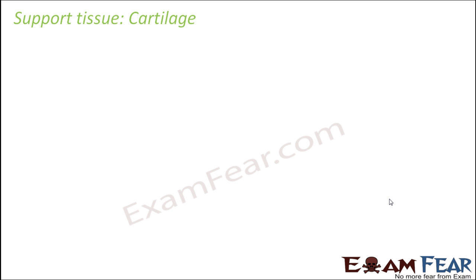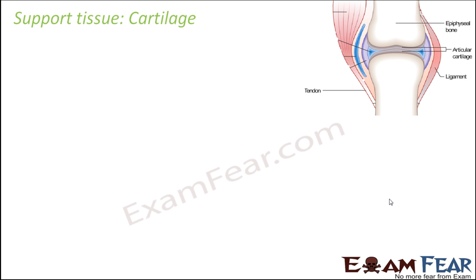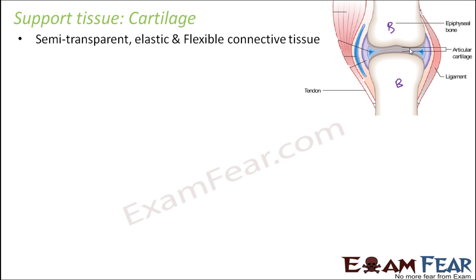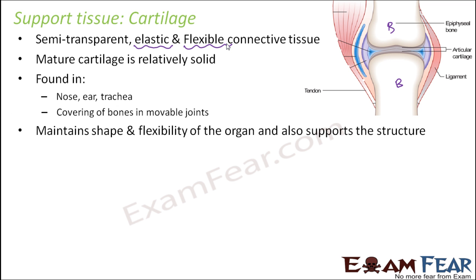Now let us talk about the next supportive tissue: cartilage. Cartilage is a semi-transparent, elastic, and flexible connective tissue. Like bone it is a connective tissue, but it is elastic and flexible — there is some scope of bending and stretching, and it will not break that easily. Mature cartilage is relatively solid.